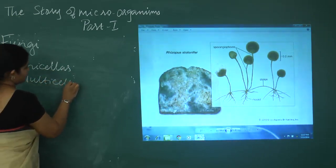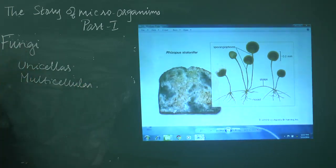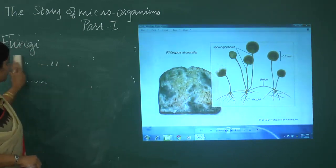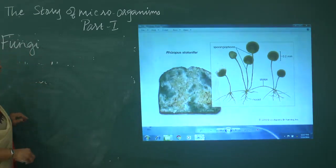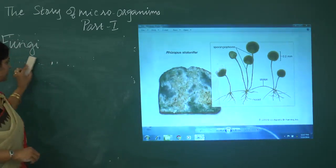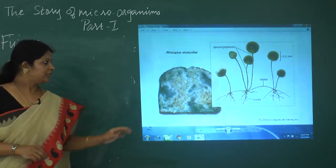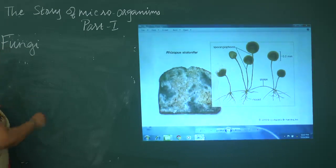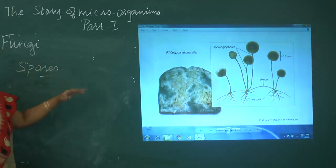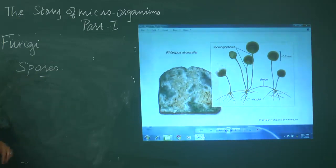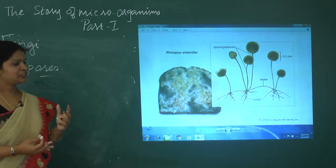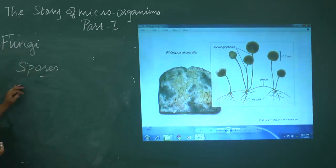Unicellular fungi can be seen only through a microscope. You can observe fungi in a bread slice. Fungi reproduce by means of spores. They are heterotrophs — they cannot prepare their own food and depend upon other sources. They bring up new generations only by means of producing spores.